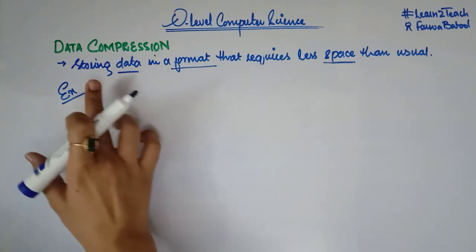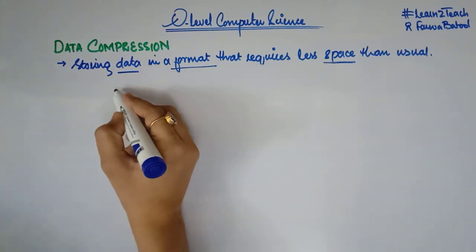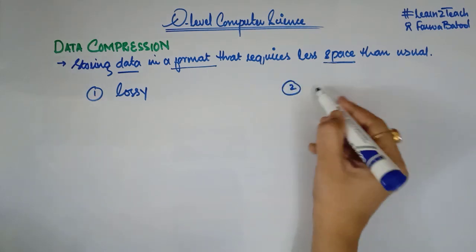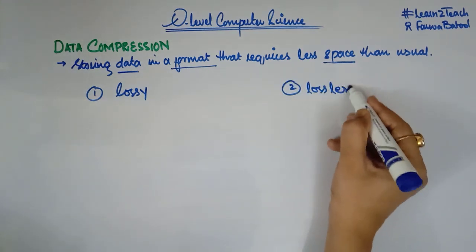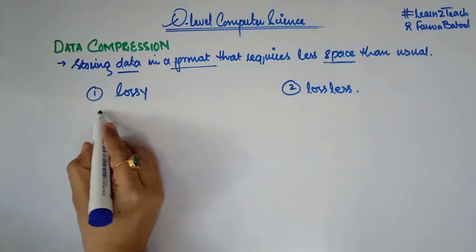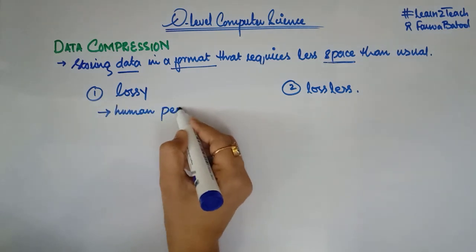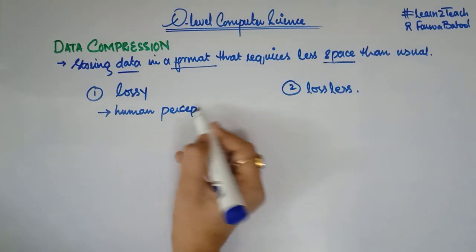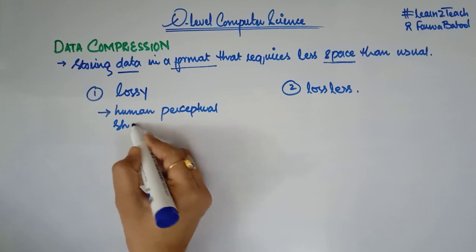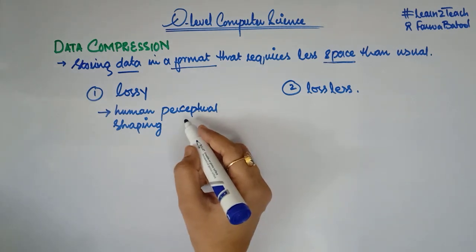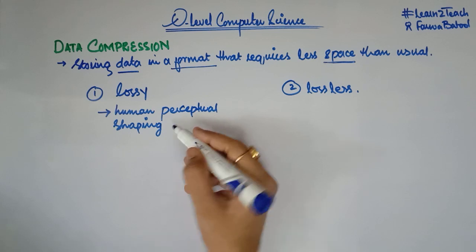Moving towards the types of data compression used in computing, there are two types. The very first is lossy compression, and the second one is lossless. In lossy compression, we use human perceptual shaping, which means removing unnecessary information that cannot be heard or cannot be seen by a human.